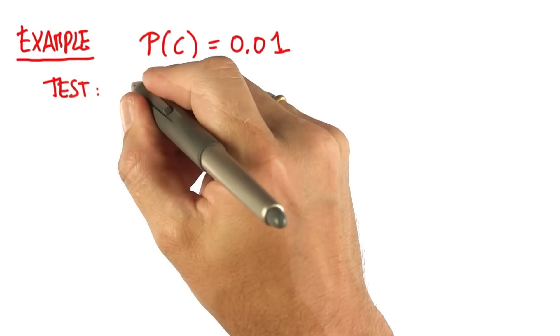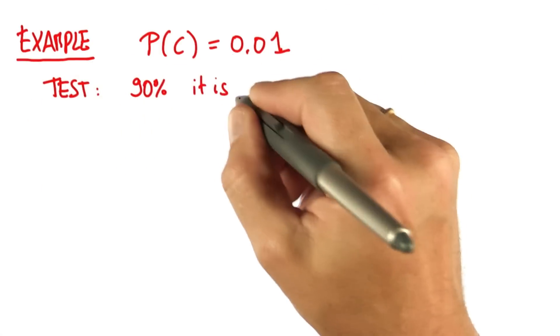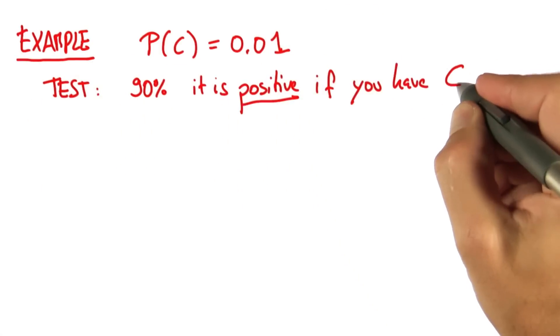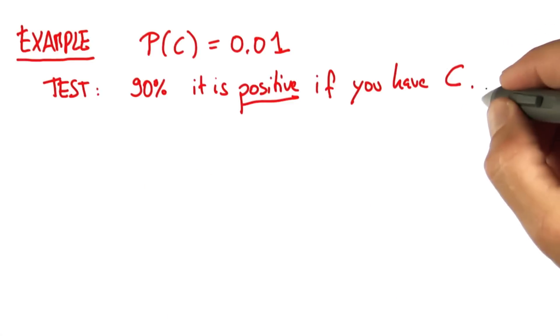In the test for this cancer, with 90% chance, it is positive if you have this cancer, C. That's usually called the sensitivity of a test.